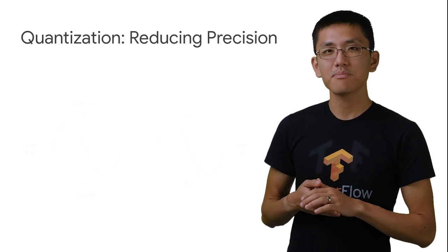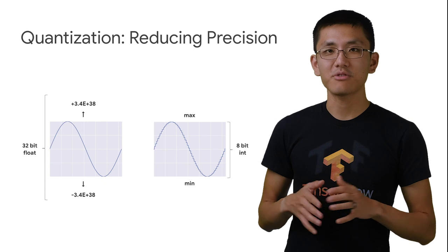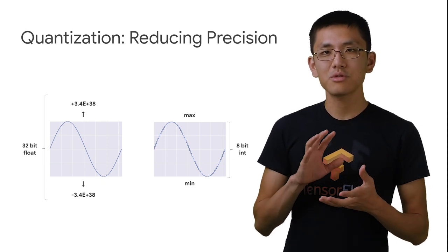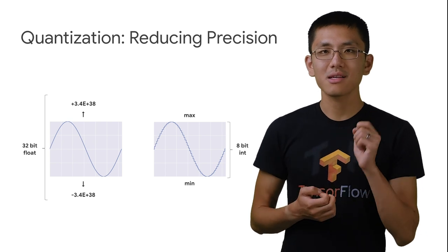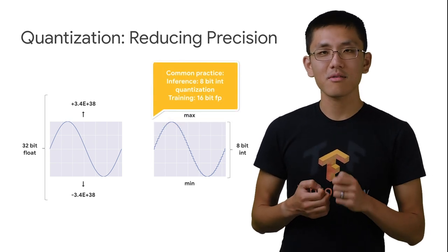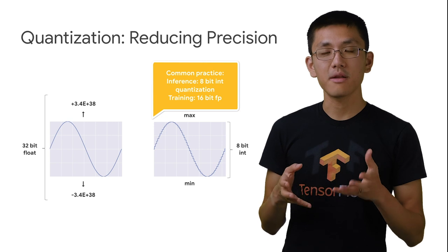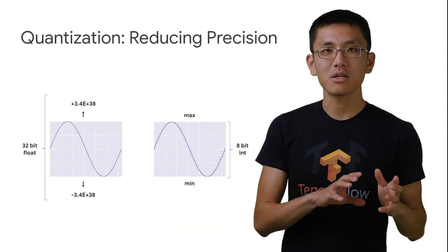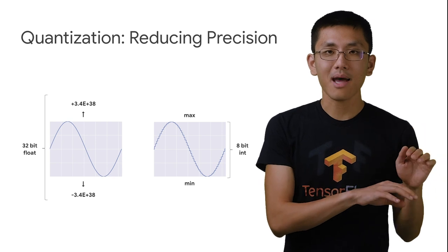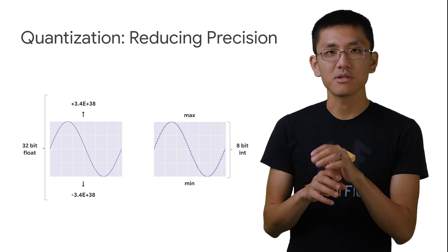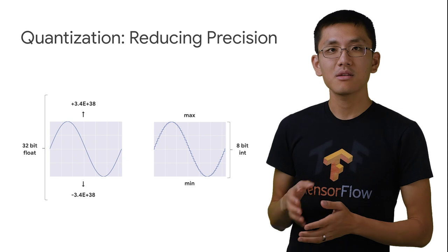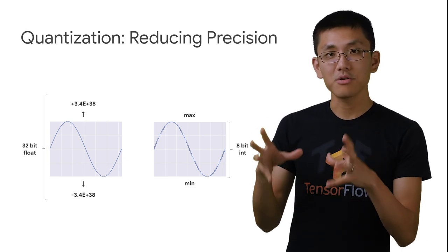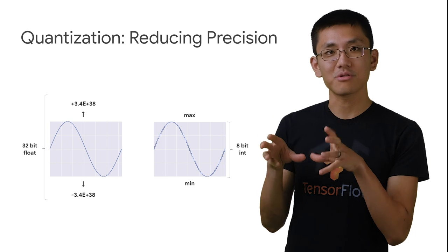Neural networks boil down to a rich set of matrix multiplications and additions. The team decided to reduce the precision of the chip using just 8-bit integers rather than the conventional 32-bit floating-point numbers. And using a technique called quantization, they could convert or map 32-bit floating-point numbers to 8-bit integers, which allowed significantly more integer multiplier units to be fit into a single chip.